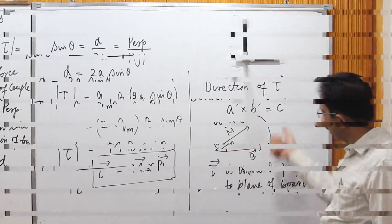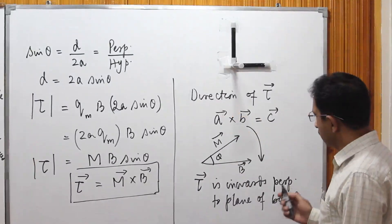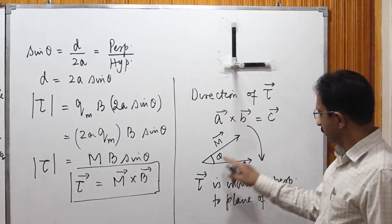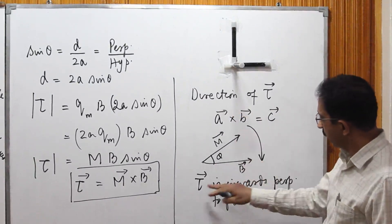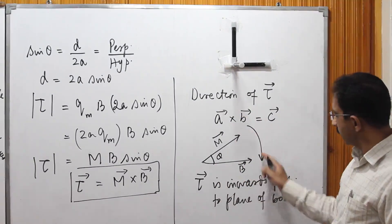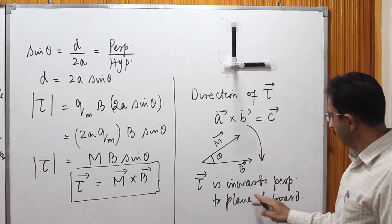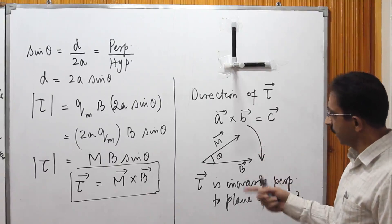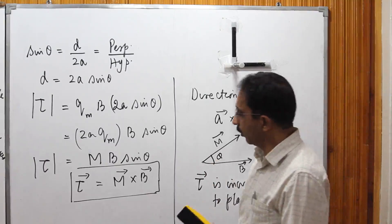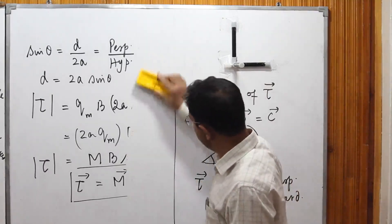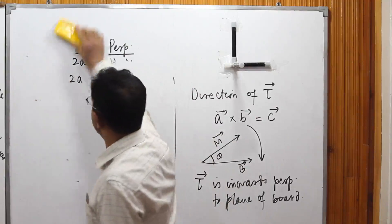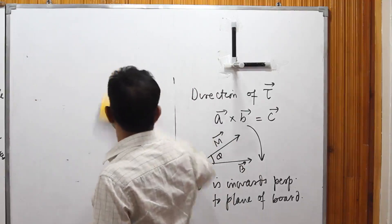If the rotation is anti-clockwise, the torque will be outwards — out of the plane of the board. So torque is inwards for clockwise rotation and outwards for anti-clockwise rotation.